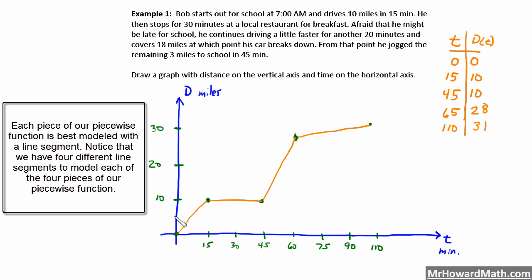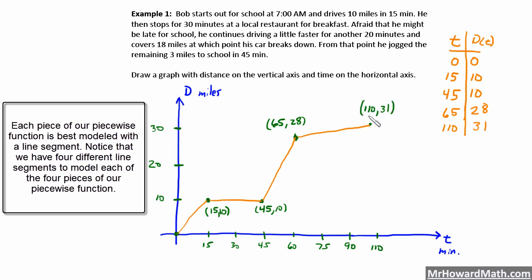Now I'm going to label all of these points. We have (15, 10), (45, 10), (65, 28), and the last point (110, 31). It takes a while to draw this graph, but we really need it because the next questions will ask us to apply this piecewise function. We have one, two, three, four pieces to this function.